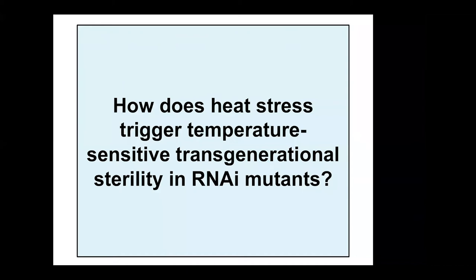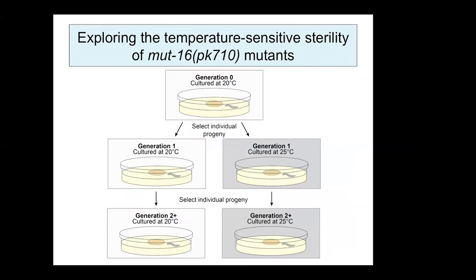How heat stress triggers sterility in RNAi mutants, and what dictates the generation at which different RNAi mutants reach sterility, remains an open question. To study this, we took advantage of the MUT-16 PK710 mutant because it reaches sterility in a single generation at elevated temperatures. Our work uses a multi-generational temperature shift assay where animals — either wild-type or MUT-16 mutants — are synchronized as L1s at permissive temperature for one generation, then transferred to either 25 degrees or maintained at 20 degrees for subsequent generations. We confirmed that MUT-16 mutants reach sterility after a single generation at elevated temperatures.